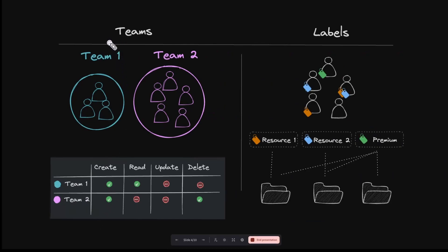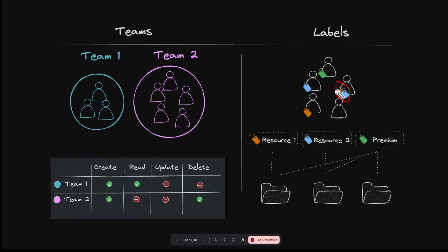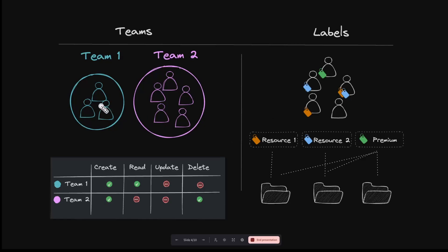The way this works is we create teams and labels in our application, then instead of assigning permission levels like read and write access to each user, we assign permissions to a team or a label and add a user to it. From that point on, the user inherits all the permissions from that team or label, allowing us to manage permissions at the group level.